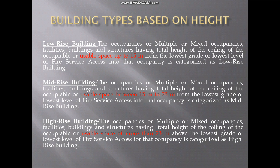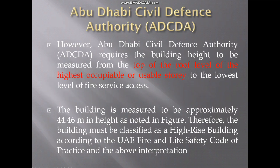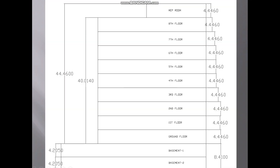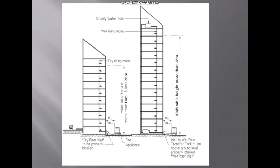Buildings with usable space up to 15 meters are considered as a low-rise building. From 15 to 23 meters is mid-rise, and more than 23 meters is a high-rise building. In our case, it is more than 23 meters, so this building is considered as a high-rise building.